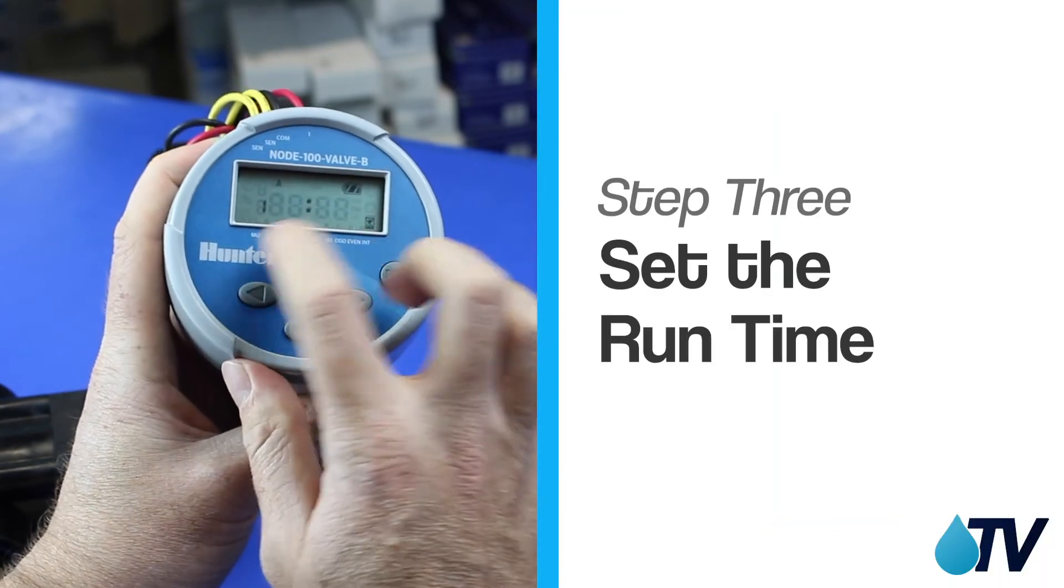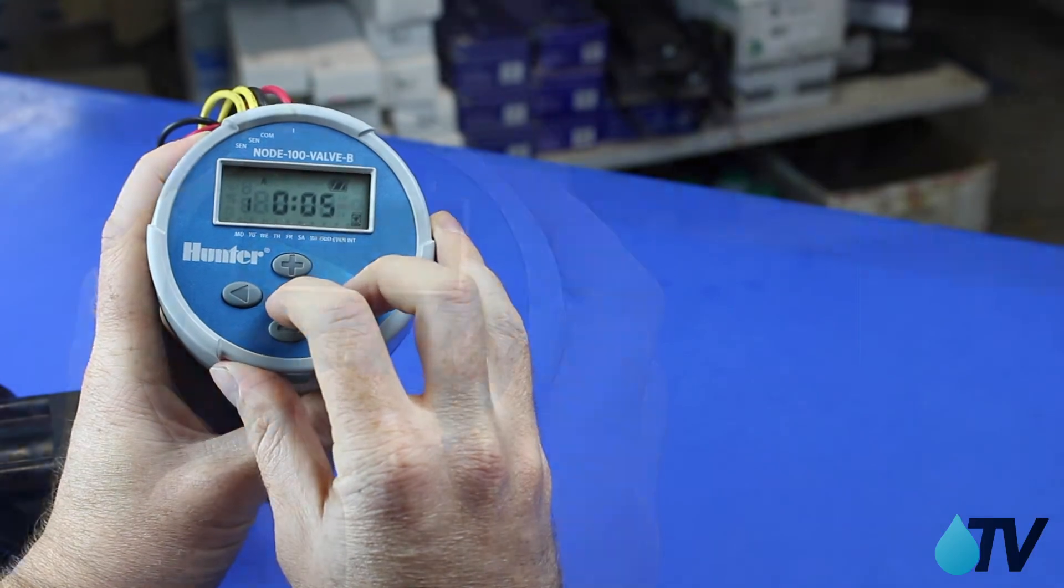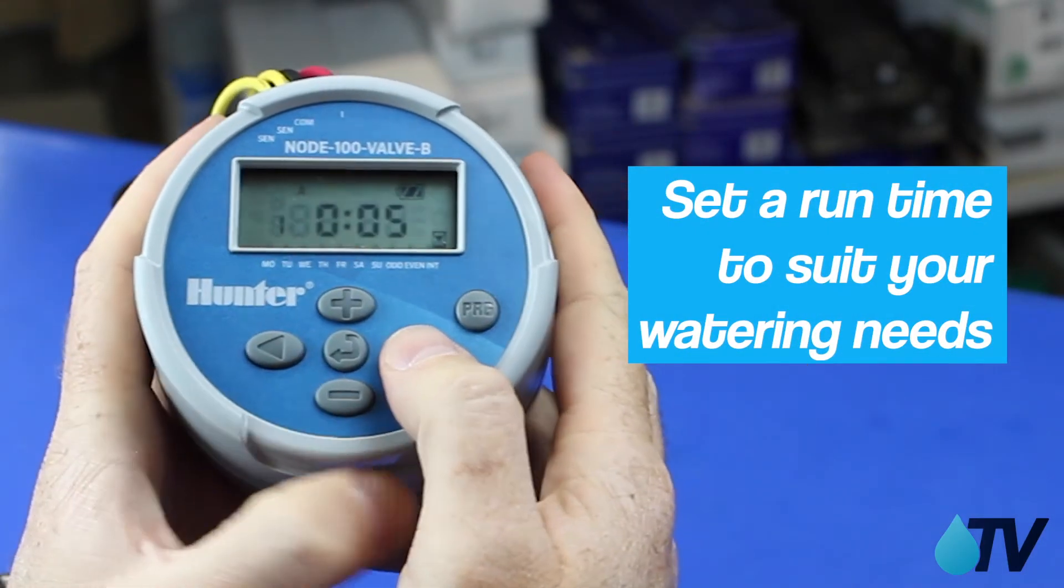So now we can scroll through to the next section, which is our run time. Let's just put it on for five minutes. So five minutes, twice a day.